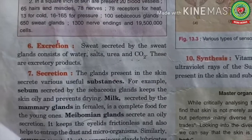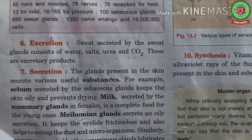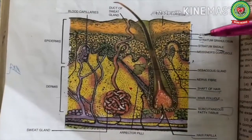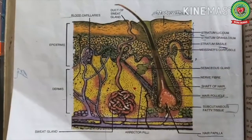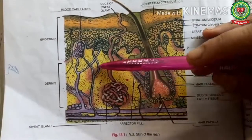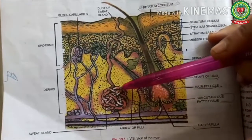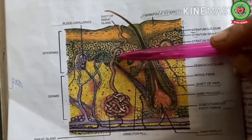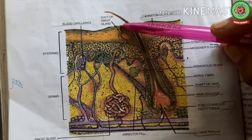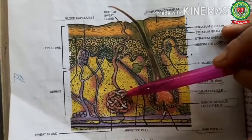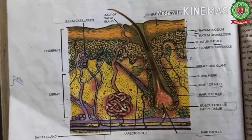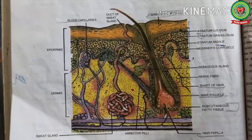Next function is excretion. Sweat secreted by sweat glands consists of water, salts, urea, and carbon dioxide — all of which are excretory products. The sweat glands are highly coiled and present in the dermis portion. They have sweat ducts that open at the surface of the epidermis through pores called sweat pores, through which sweat is excreted.